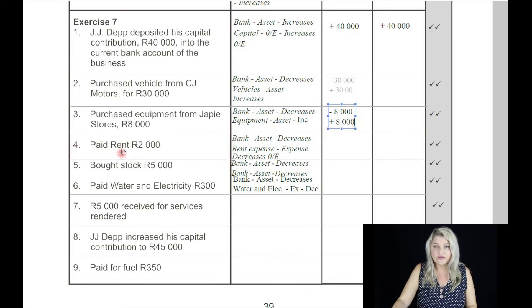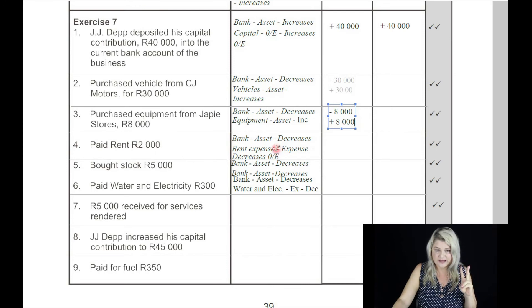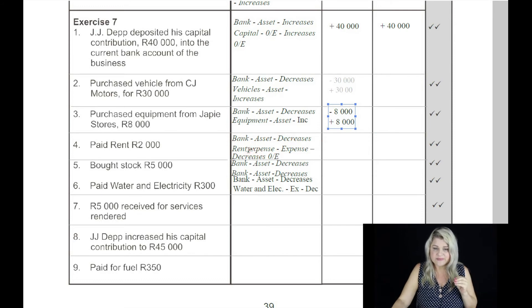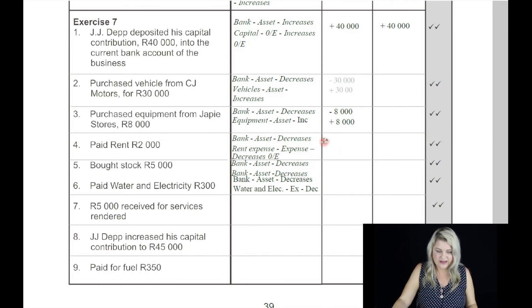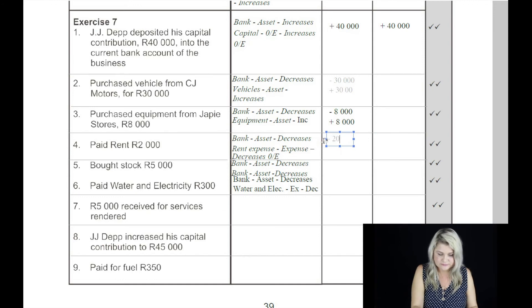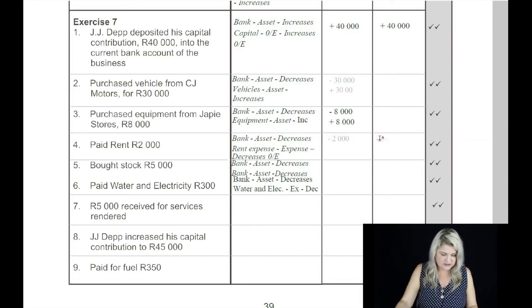On the fourth: paid rent, 2,000 Rand. The two accounts are bank and rent expense. Bank is an asset — it decreases because we're paying rent. Rent expense is an expense to the business, and an expense always decreases owner's equity. So bank, as an asset, decreases by 2,000 Rand, and the expense decreases owner's equity by 2,000 Rand.